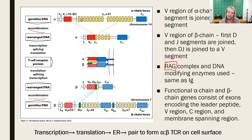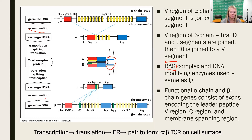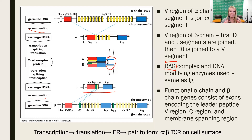A functional alpha and beta chain consists of exons that include a leader peptide, a complete variable region, a constant region, and also a membrane spanning region. The alpha and beta chains are transcribed and translated independently of each other, but they are joined together in the endoplasmic reticulum. The polypeptide chains are moved into the ER, where the alpha and beta chains pair together and are then exported to the surface of the cell.